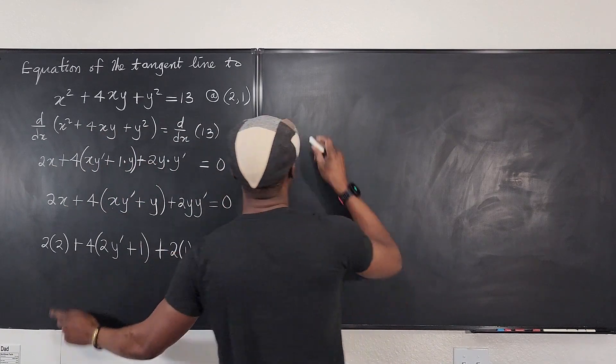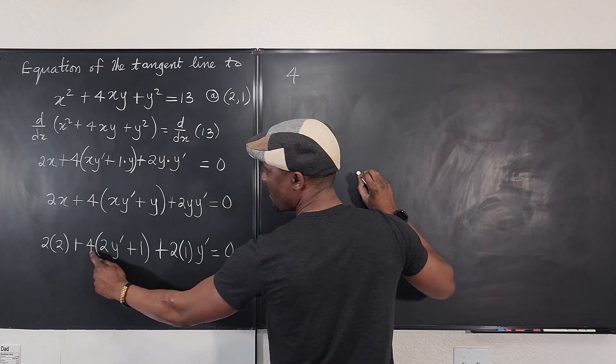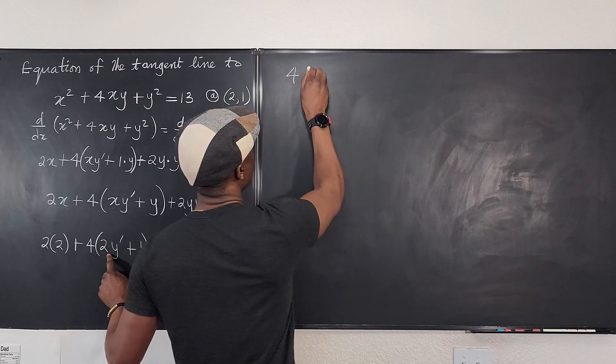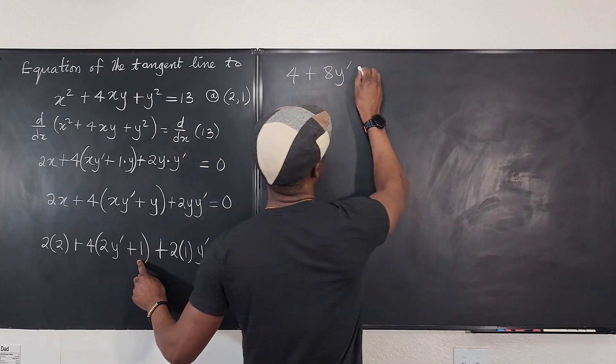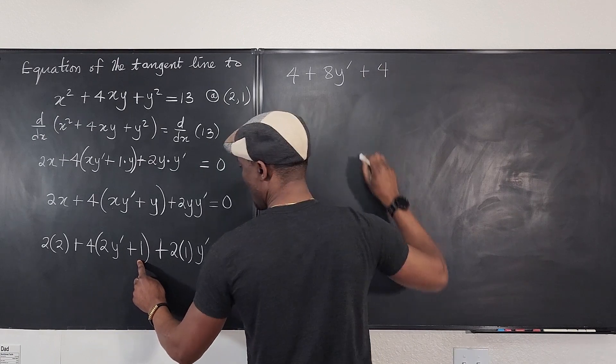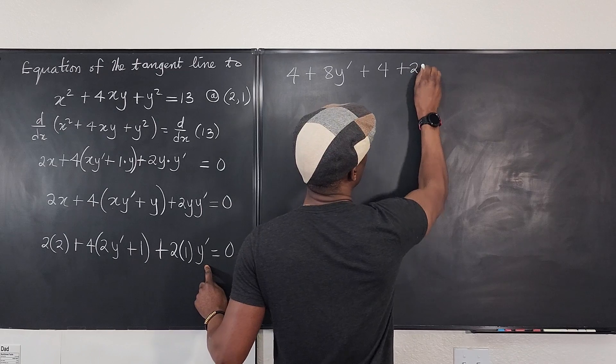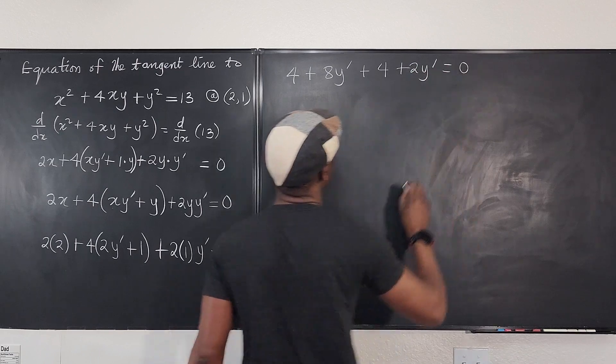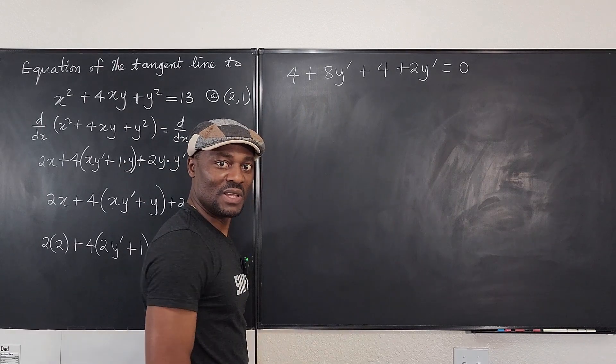Now let's multiply numbers. Clearly this is going to be 4, so we have 4. And this is going to be, if you distribute this, you're going to have 8y prime. And this is going to be plus 4. And then you go here, this is going to be 2y prime is equal to 0. Now we can collect, you see, this is easier to deal with.